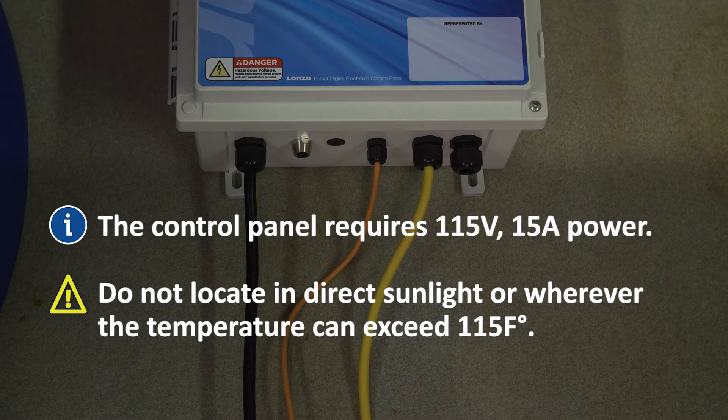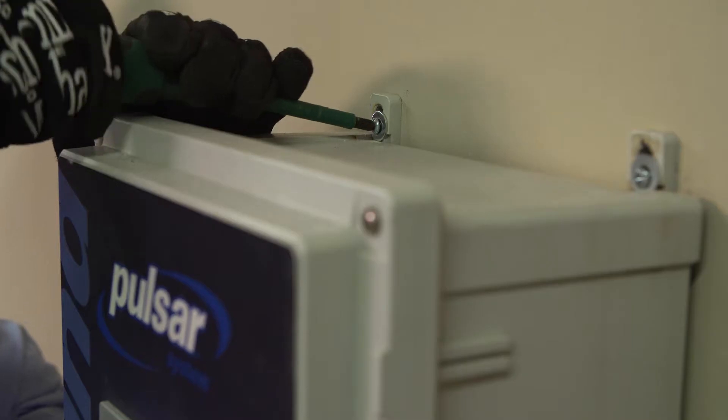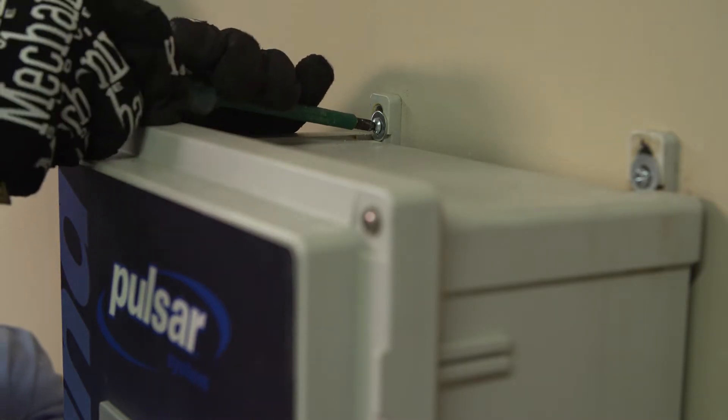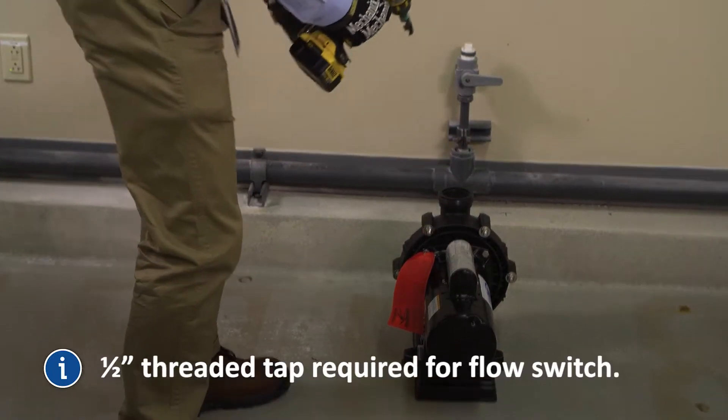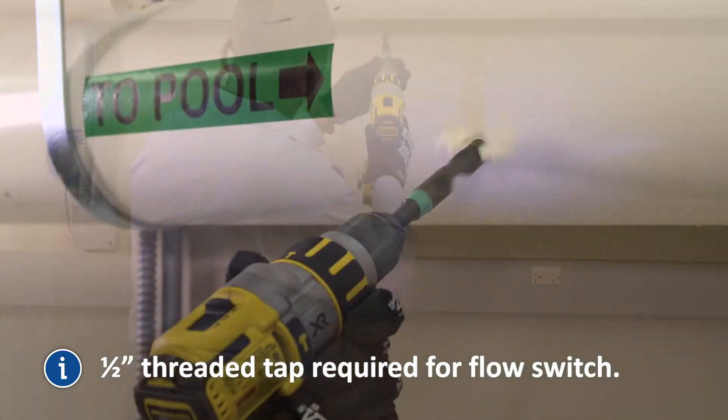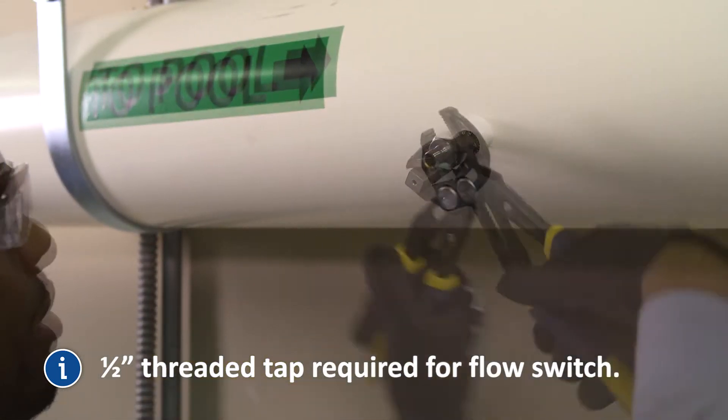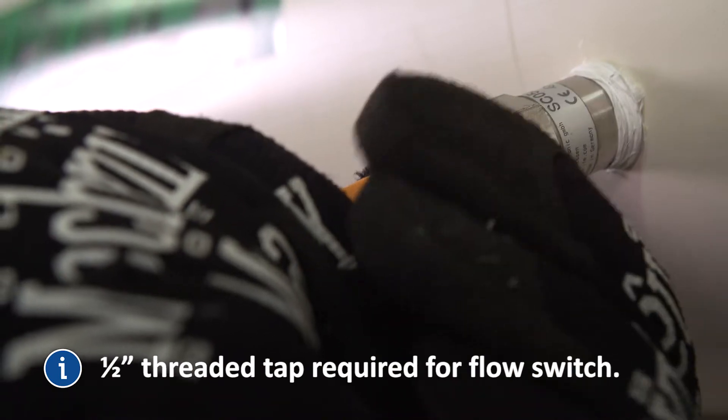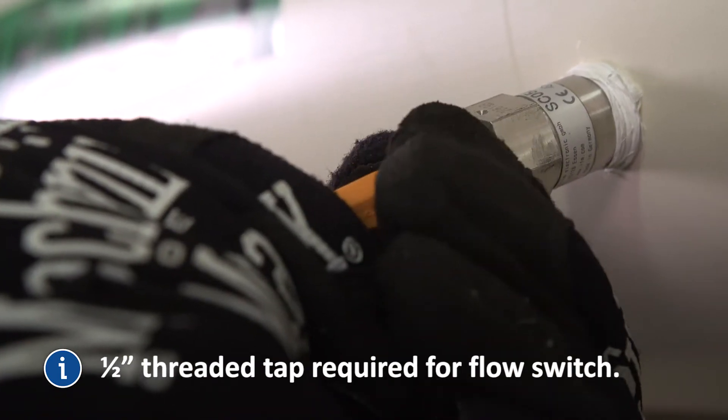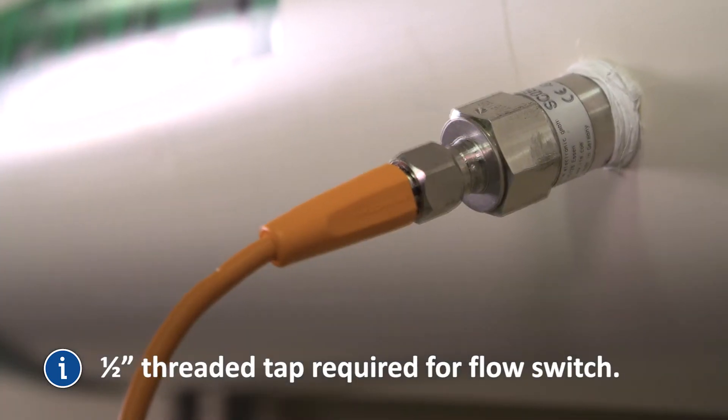Do not locate your control panel in direct sunlight or wherever the temperature can exceed 115 degrees Fahrenheit. Mount the control panel. Install the flow switch in the pool return line near the inlet to the booster pump loop. Then connect the orange flow switch cable from the control panel to the flow switch. This interlocks the booster pump with the pool return water flow to protect the booster pump internals from a no-flow condition.